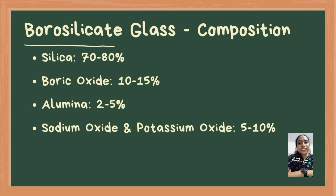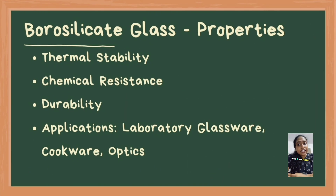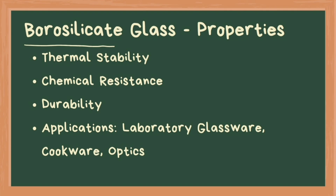Borosilicate glass is known for its excellent thermal stability and chemical resistance. It is composed of 70–80% silica (SiO2), 10–15% boric oxide (B2O3), 2–5% alumina (Al2O3), and 5–10% sodium oxide (Na2O) and potassium oxide (K2O). This composition gives borosilicate glass a low thermal expansion coefficient, making it resistant to thermal shock, and high resistance to acids and bases, except hydrofluoric acid. Its durability and strength make it suitable for laboratory glassware, heat-resistant cookware, and optical components.